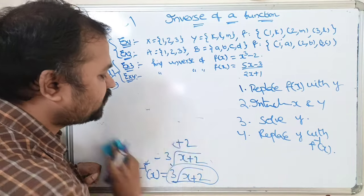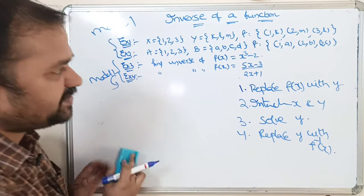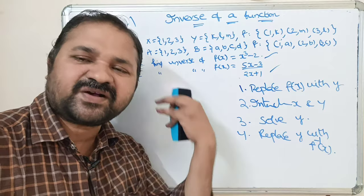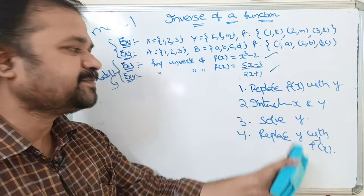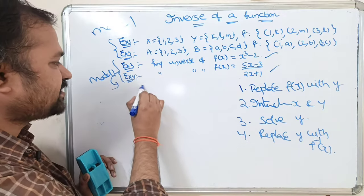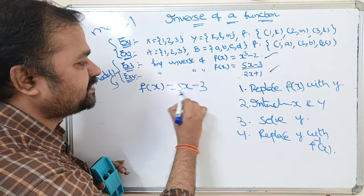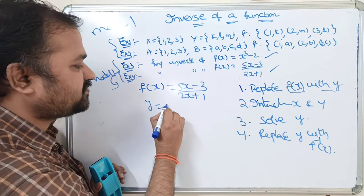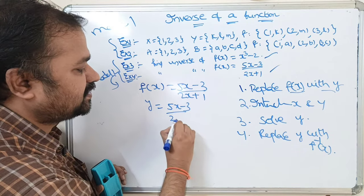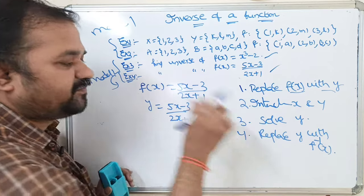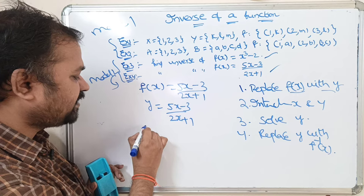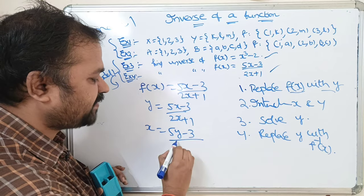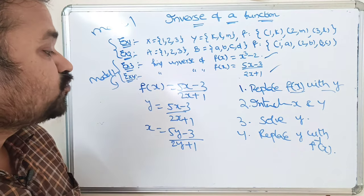For these types of algebraic examples there is no need to check whether it is bijective, because those functions are already bijective. We simply apply the algorithm. Example 4: f(x) = (5x - 3) / (2x + 1). Step 1: replace f(x) with y, giving y = (5x - 3) / (2x + 1). Step 2: interchange x and y.